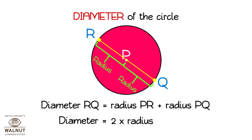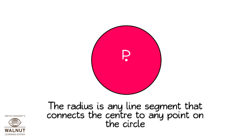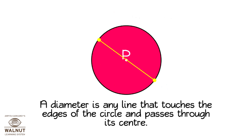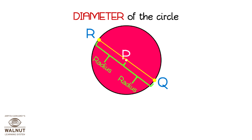All radii of the circle are equal, so the diameter is equal to radius plus radius. The diameter is equal to two times the radius. The diameter of the circle is twice as long as the radius. The radius is any line segment that connects the center to any point on the circle, and all radii of a circle are equal. A diameter is any line that touches the edges of the circle and passes through its center. The diameter is made up of two radii. Diameter is always double the radius; radius is always half the diameter.